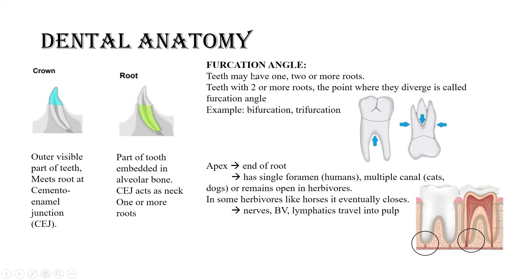Next is the furcation angle. Teeth in a mouth can have one, two, or more than two roots. The point where the roots actually diverge is called the furcation angle. You can see this tooth has two roots, so the angle between these two is called bifurcation. In the next tooth there are three roots, and the angle between these three roots is called trifurcation.